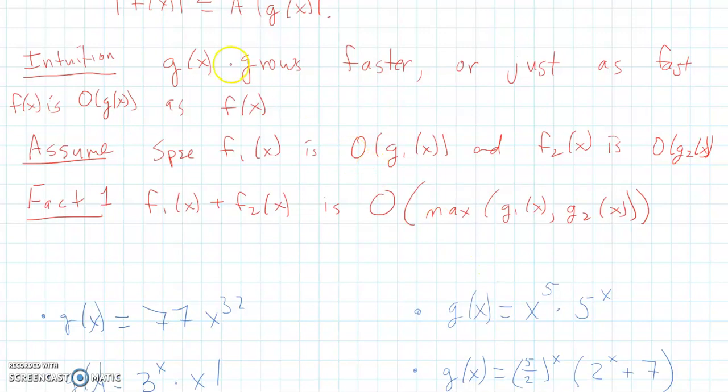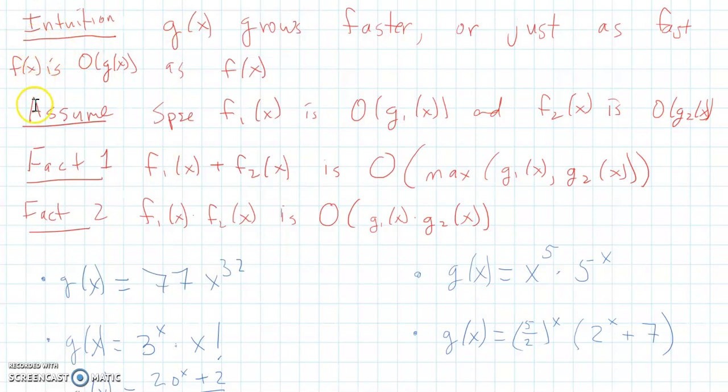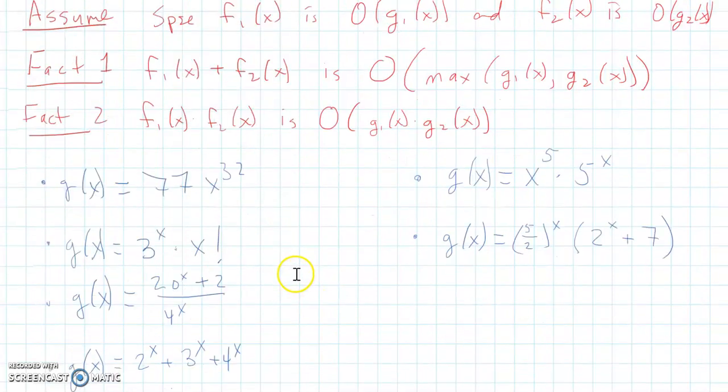And then fact two says that f1 of x multiplied by f2 of x, this is big O of g1 of x multiplied by g2 of x. So when you're multiplying two functions together and you want to find the big O bound, you multiply their bounding functions together. So with this intuition idea and then these two facts, that's really all you need to do any of these problems, as long as you know which are the biggest functions.